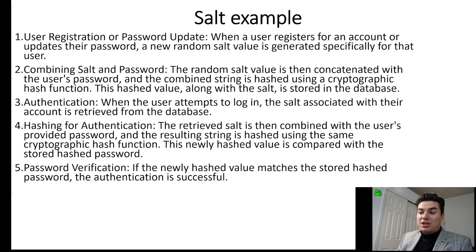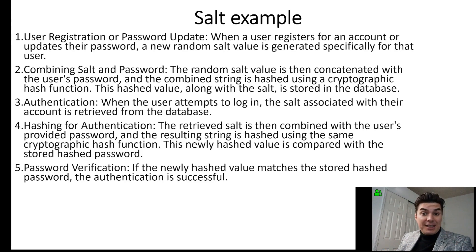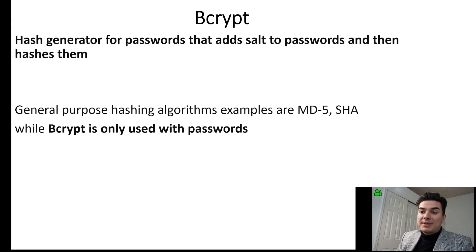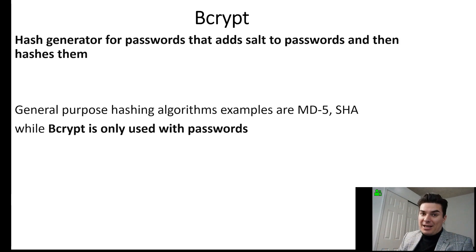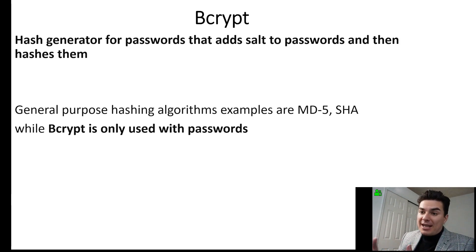This new hash value is compared with the stored hashed password. If the hash values match, then authentication is successful. Bcrypt is a hash generator for passwords that adds salt to the passwords and then hashes them. It's specifically designed to be used only with passwords, versus a general-purpose hashing algorithm like MD5 or SHA, which you can use with many things. Bcrypt is specifically designed for passwords — it adds salt and then hashes them.